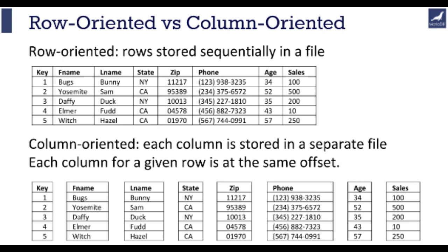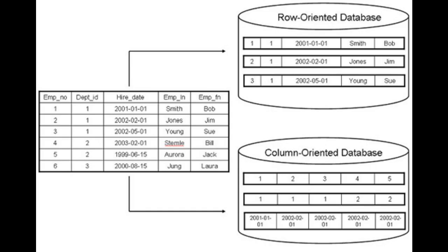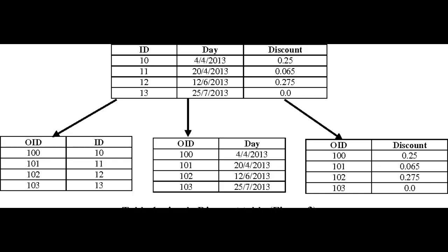One of the key features of Q-KDB+ is its column-oriented design. This means that data is stored in columns rather than rows, which allows for faster data retrieval and analysis. Q-KDB+ also supports vector operations, which further enhances its performance.